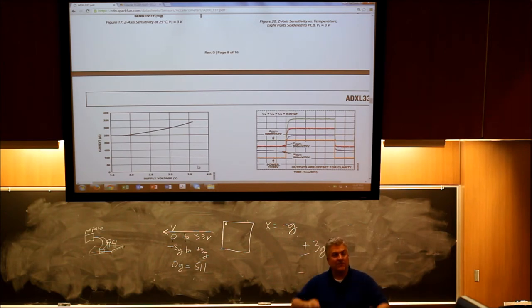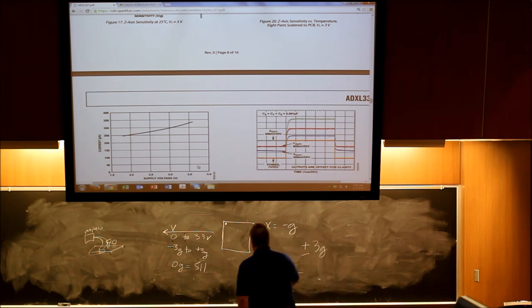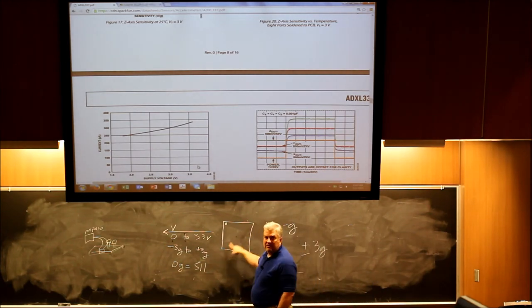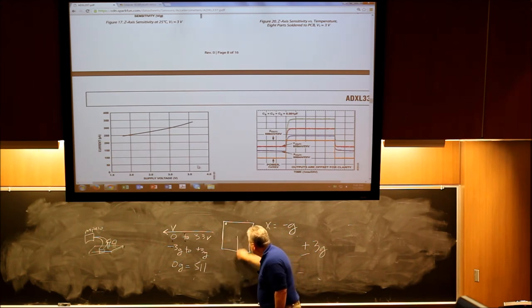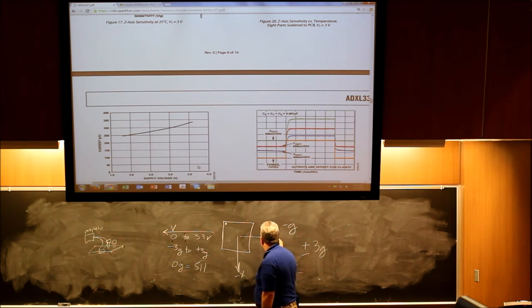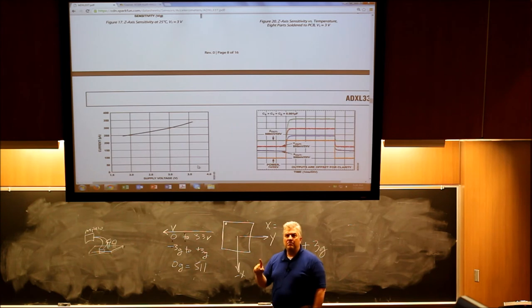So about halfway in the middle is about 511. So if you want to measure what is your levelness, well you could just set it up like that and you could identify where g is. Well think about this, if this is minus X, right, and this is Y...